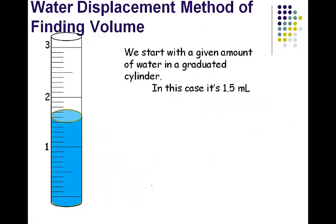To do the volume displacement method, we start with a given amount of water in our graduated cylinder — in this case, 1.5 milliliters. Remember, when we're reading the volume of water in a graduated cylinder, we read from the bottom of the meniscus.